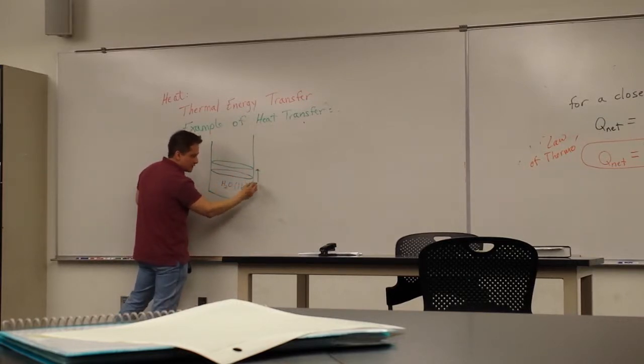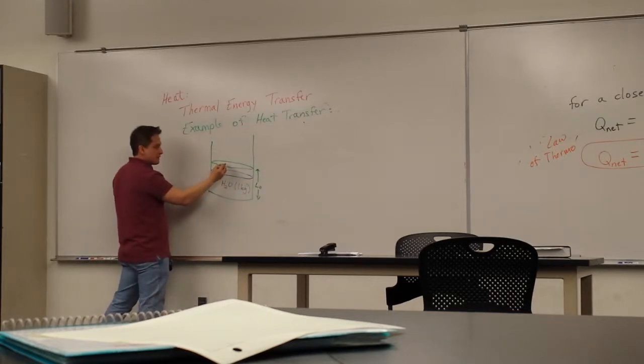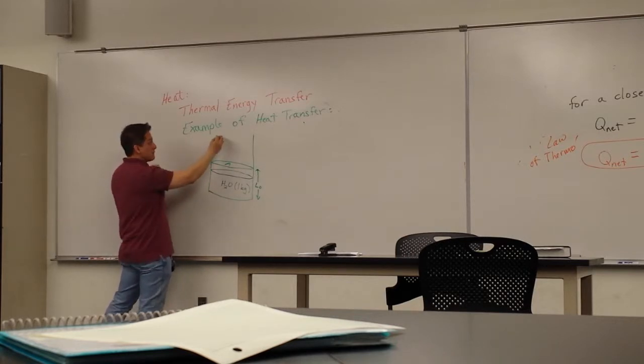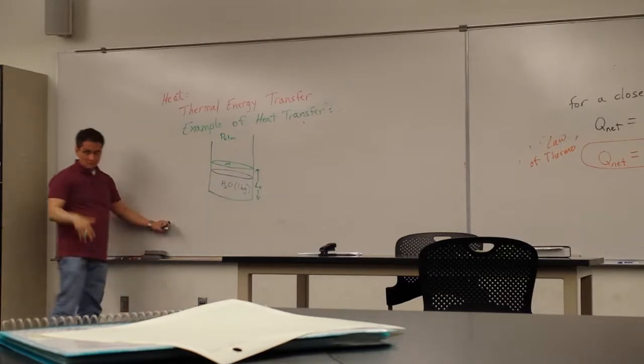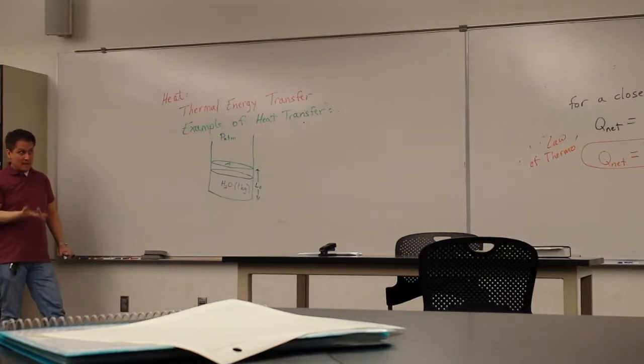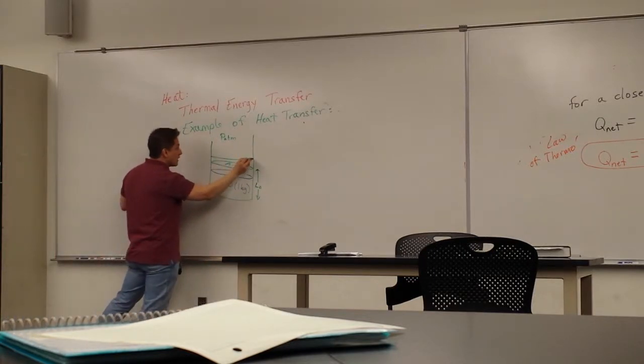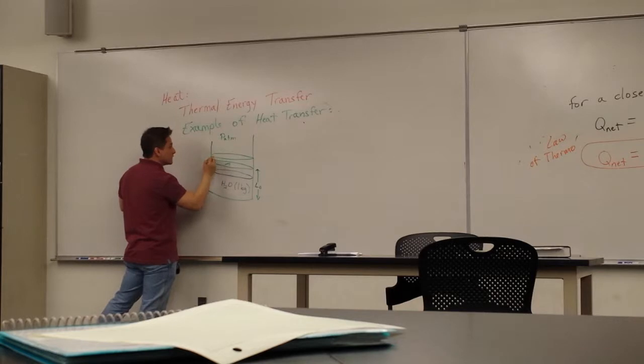So I'm going to call this L-naught. And again, let's give this a surface area of A. It's in a regular room, so up here somewhere we have P atmosphere. Now, I've got to be a little bit careful here because I don't know specifically what values to be used here.